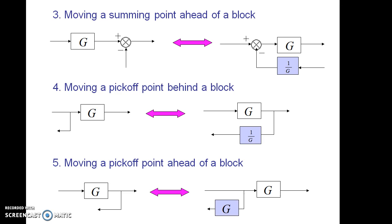The next rule is inverse to the previous fourth rule - that is moving a pick-off point ahead of a block. In this case, the effect of the gain factor G will not be there in the feedback path, so again it is to be included as G on the feedback path.